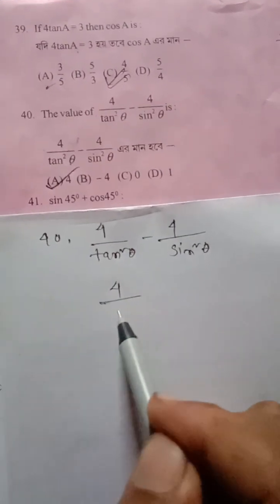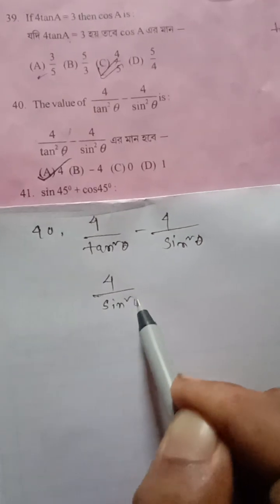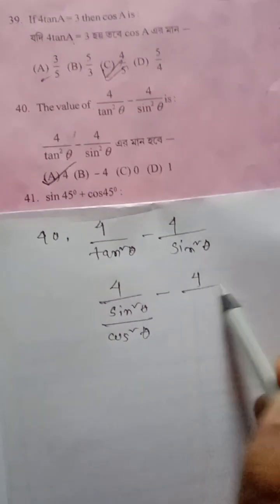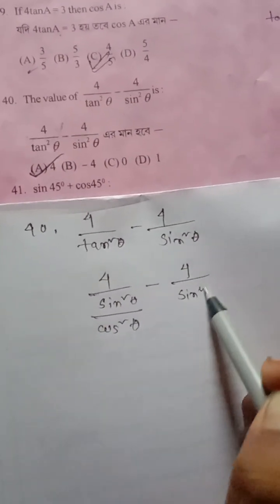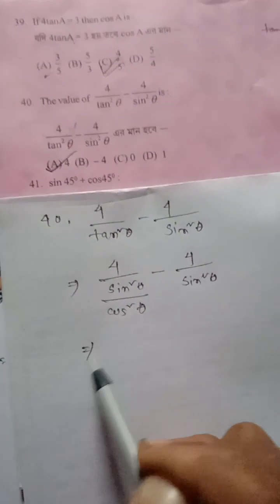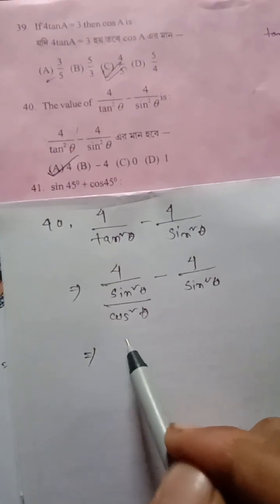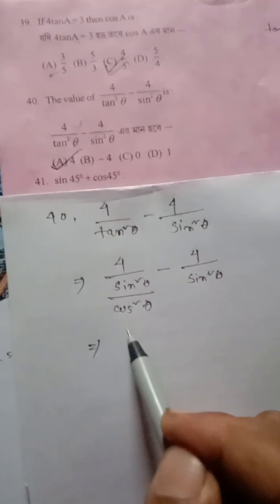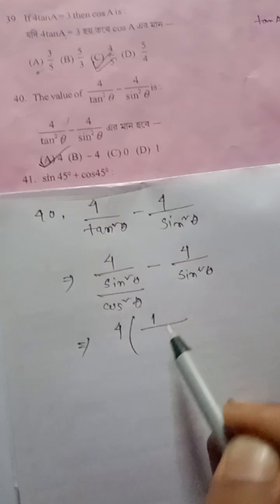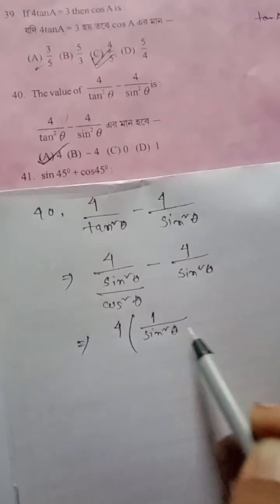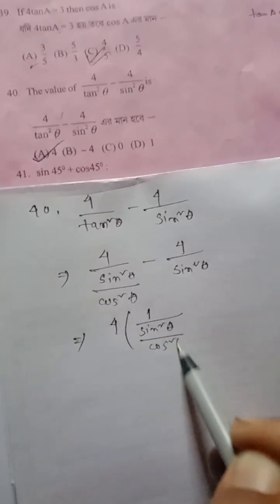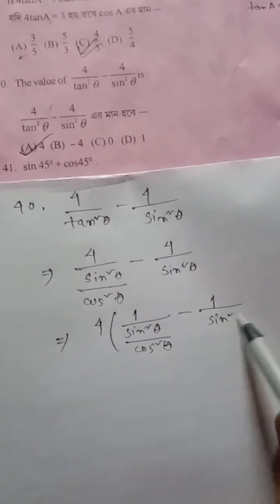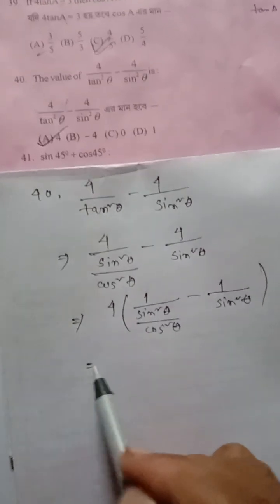We can write tan squared theta as sin squared theta by cos squared theta, minus sin squared theta remaining the same. If we take 4 as common, it becomes 4 times the quantity 1 by sin squared theta over cos squared theta, minus 1 by sin squared theta.